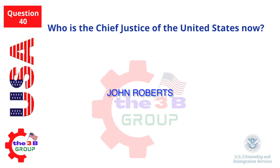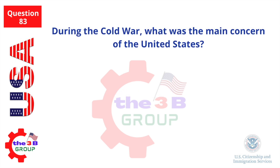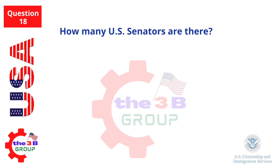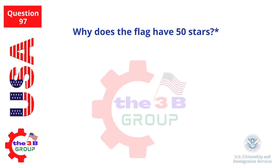John Roberts. During the Cold War, what was the main concern of the United States? Communism. How many U.S. Senators are there? 100.